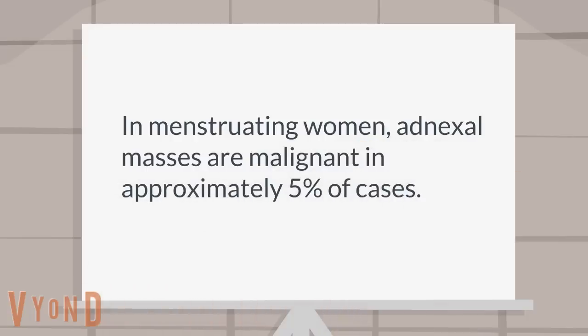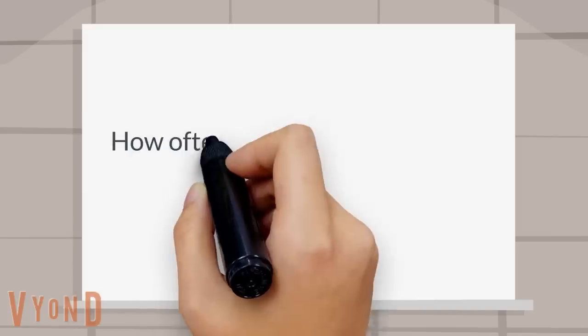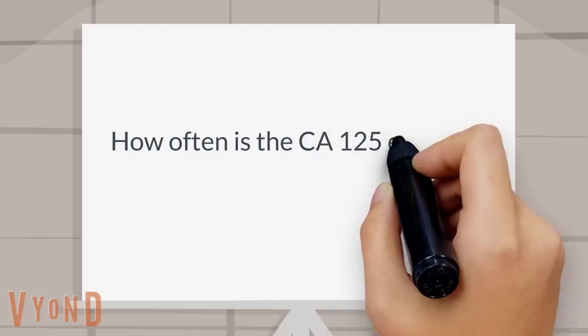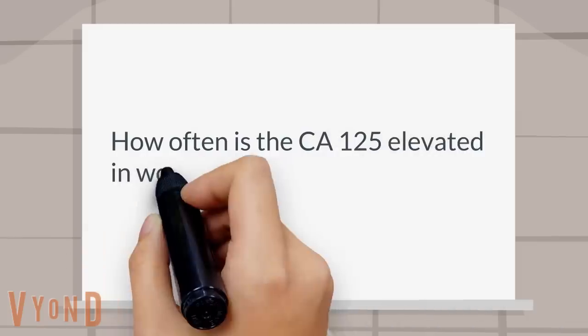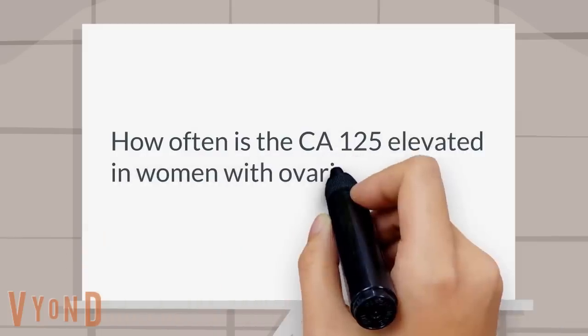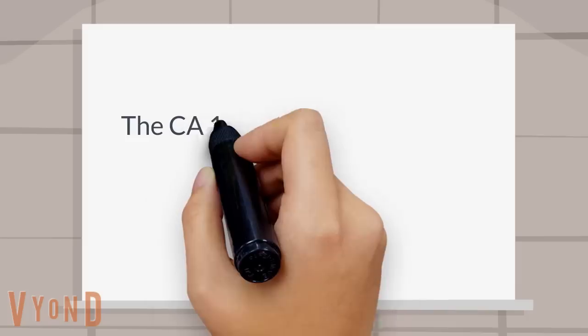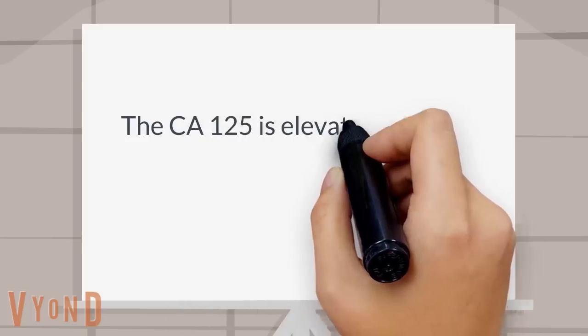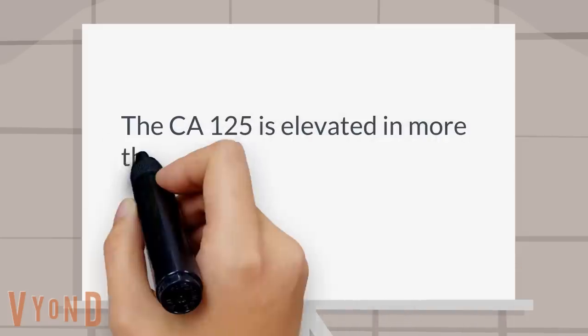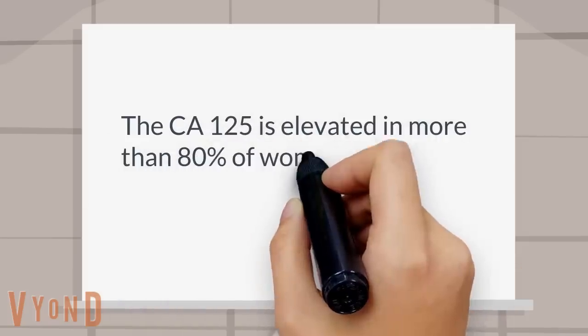How often do adnexal masses turn out to be malignant in menstruating women? In menstruating women, adnexal masses are malignant in approximately five percent of cases. How often is the CA-125 elevated in women with ovarian cancer? The CA-125 is elevated in more than 80 percent of women with ovarian cancer.